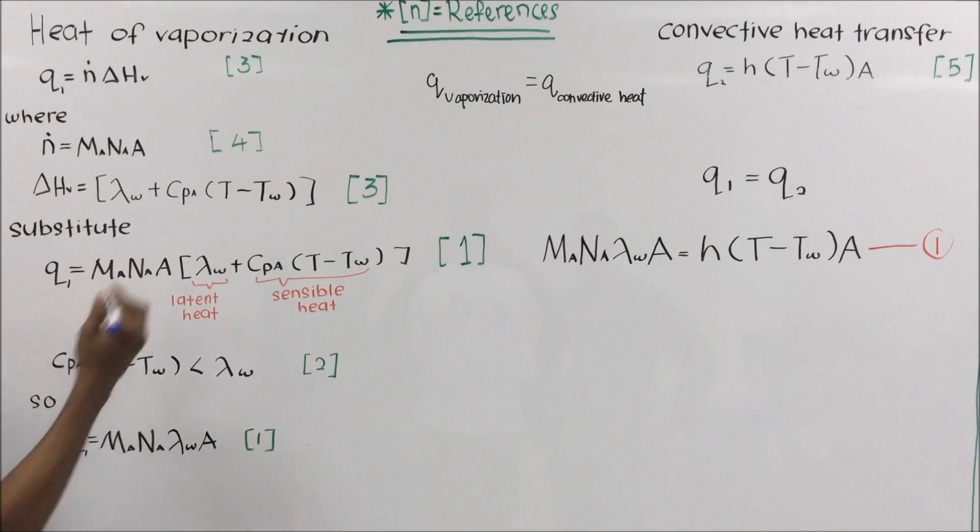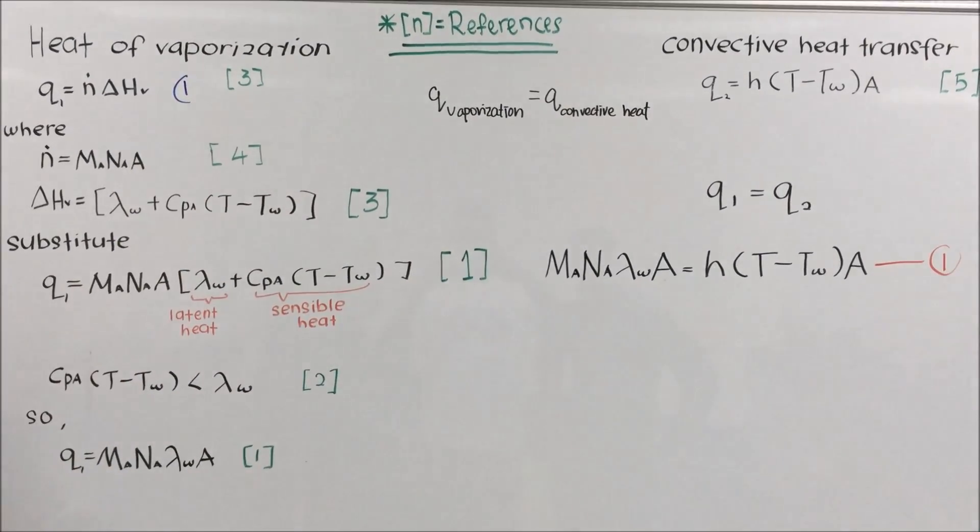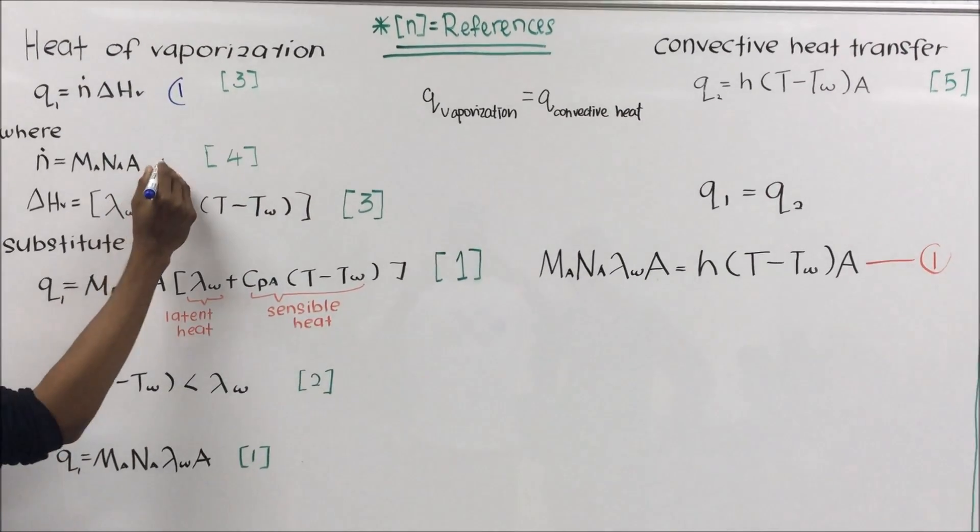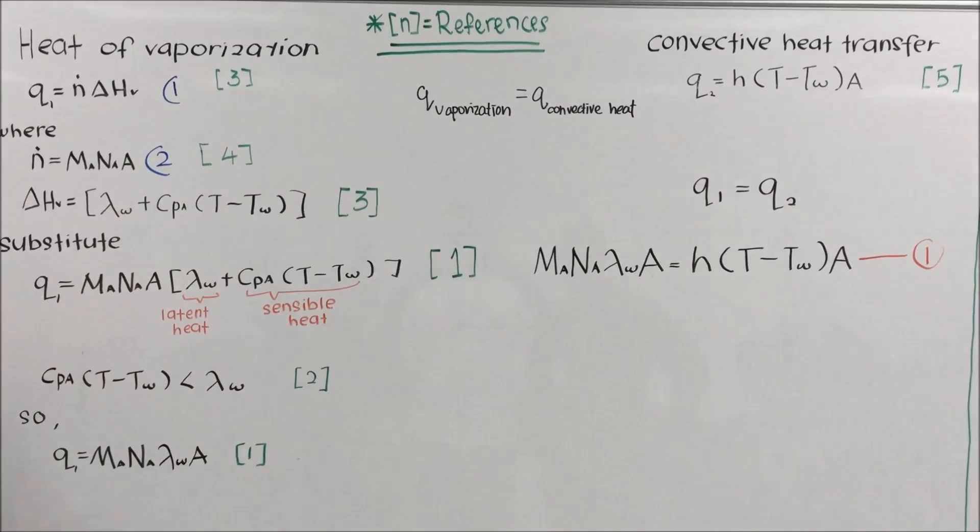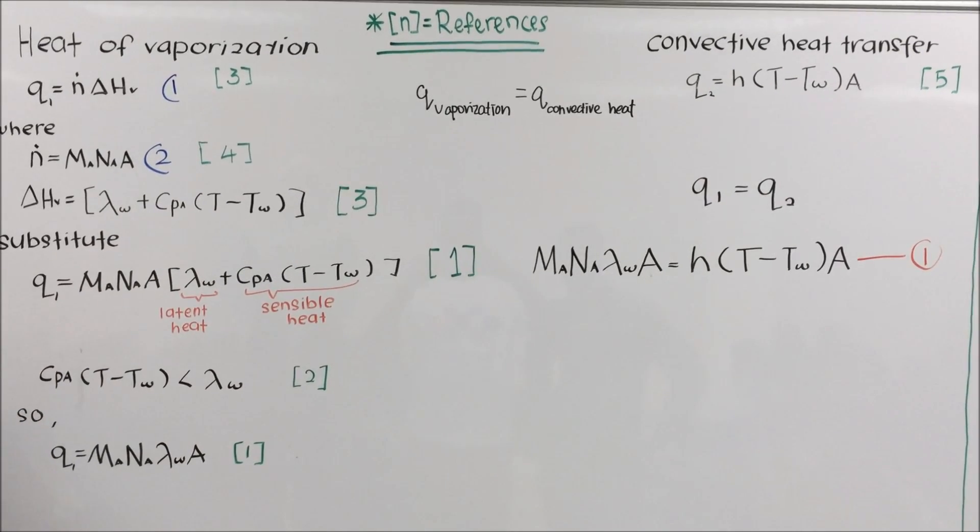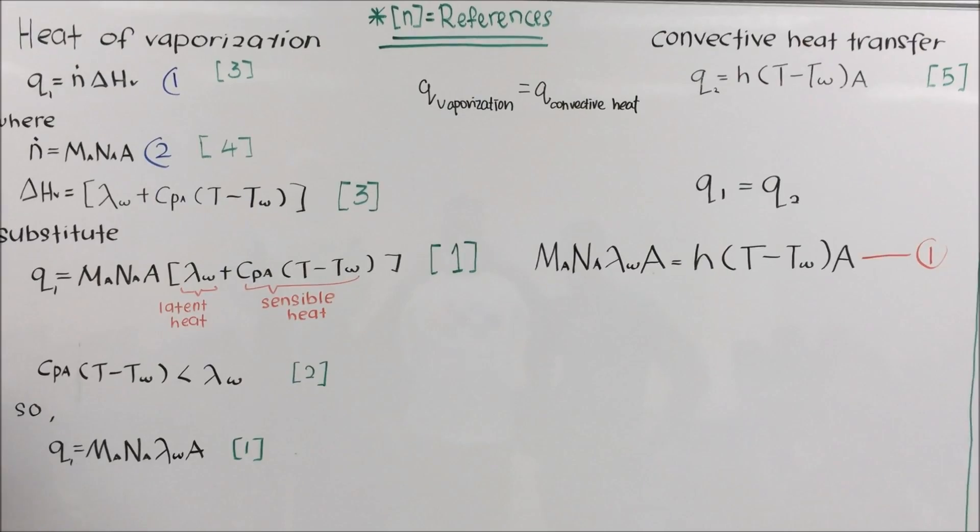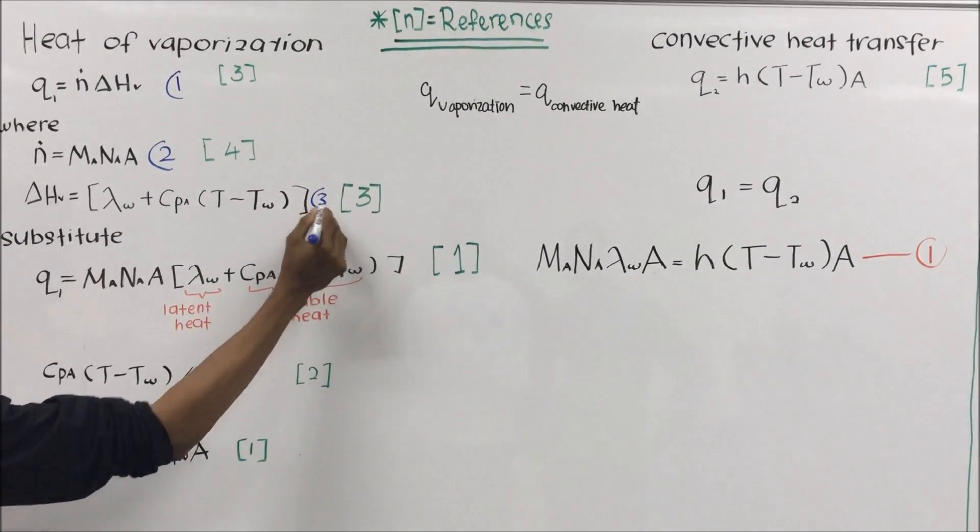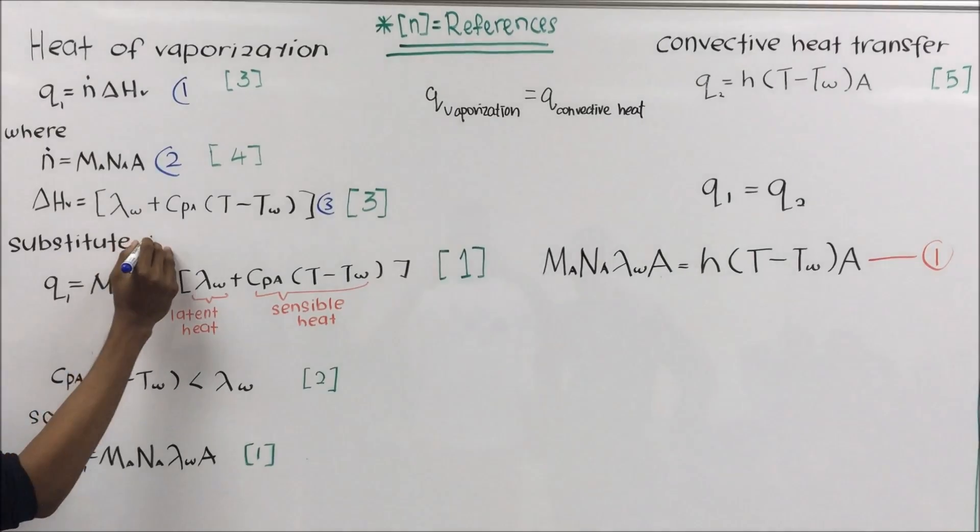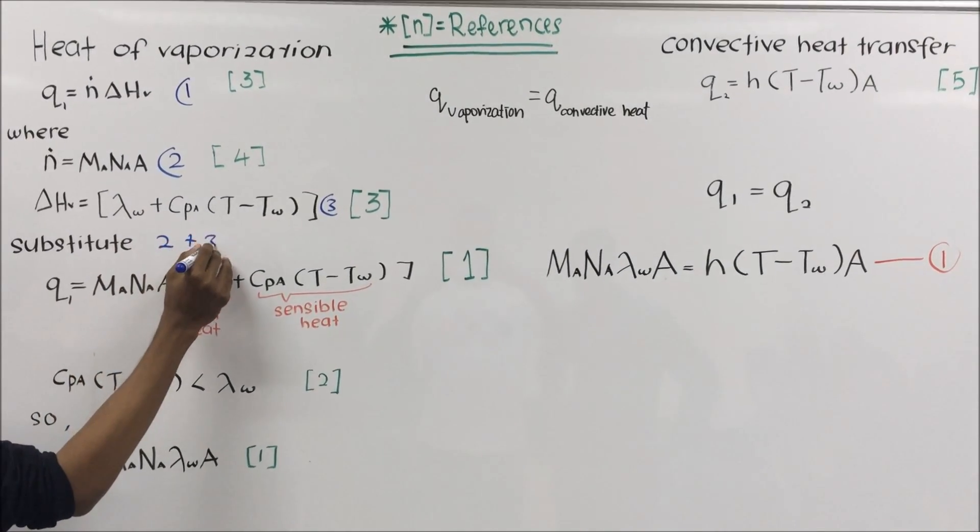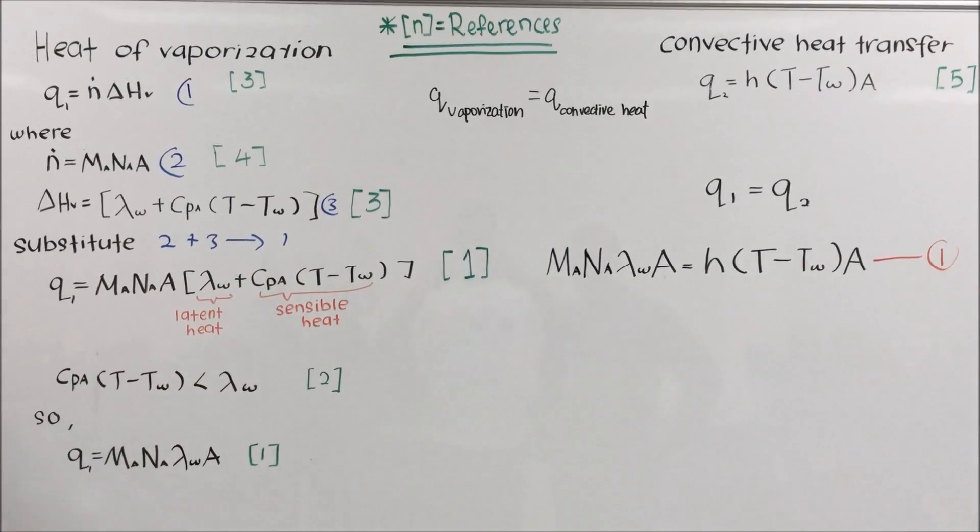For the heat of vaporization, Q is equal to N delta Hv, where N is equal to the product of Ma and A. And delta Hv is equal to lambda w plus Cp times T minus Tw. Then we substitute equation 2 and 3 into equation 1.